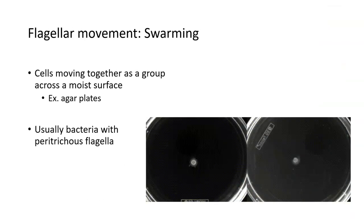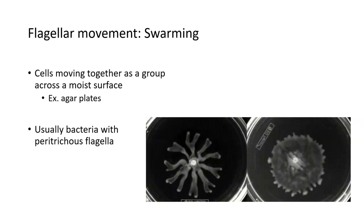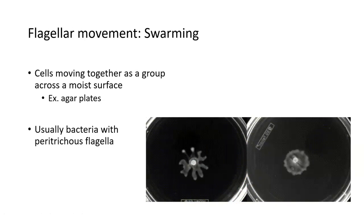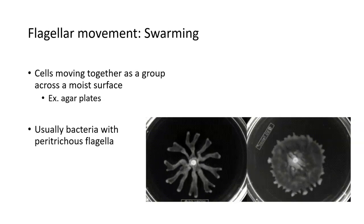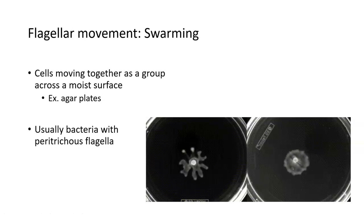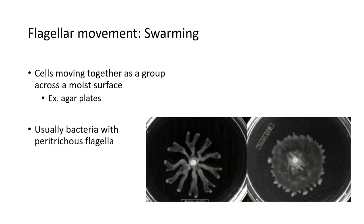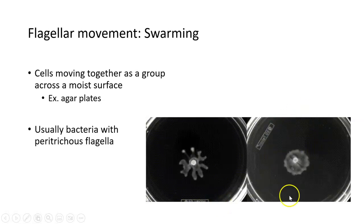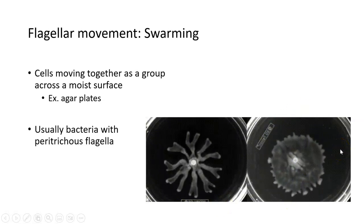Another type of flagellar movement that usually exists for bacteria with peritrichous flagella — flagella all over their outside — is called swarming. Swarming is basically a bunch of bacterial cells all moving together as a group across a moist surface, such as agar plates in the lab. Bacteria that are able to swarm can generate different patterns based on their species, so one species creates one characteristic swarming pattern while another species creates a different one.